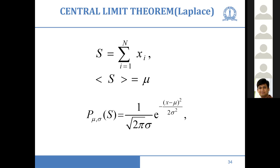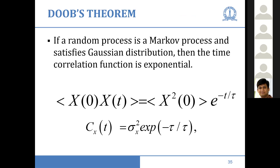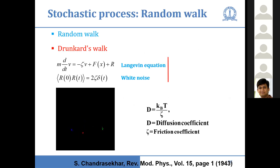Then Doob's theorem, which is the second most important theorem — probably the most beautiful theorem for us — which says that if a process is Markovian and if the value of X is Gaussian, then the time correlation function is exponential. It is just amazing. Then random walk, and the Langevin equation and related things — just beautiful and very useful.